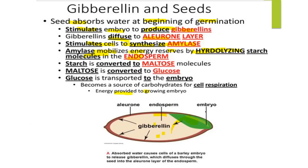To repeat: the seed absorbs water, producing gibberellins that diffuse into the aleurone layer, stimulating amylase release. Amylase enters the endosperm, hydrolyzes starch to maltose, maltose converts to glucose, and glucose goes back into the embryo for cellular respiration.